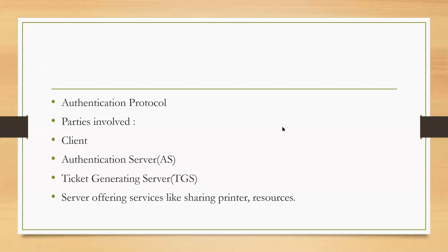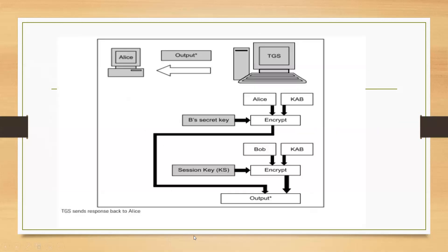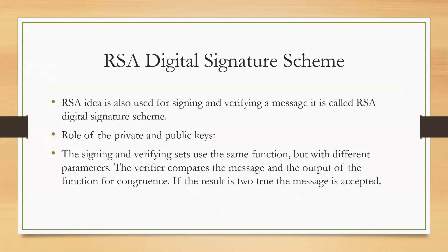The next topic is the RSA digital signature scheme. We have already discussed the RSA cryptography algorithm — how plaintext is encrypted to generate ciphertext using RSA, and solved examples. The key generation step for RSA digital signature is exactly the same as in RSA cryptography — no changes there.